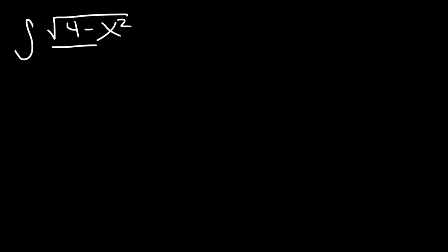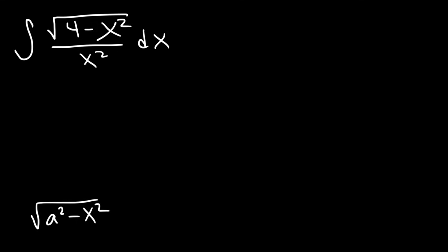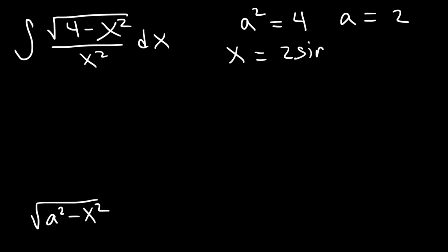Let's work on an example problem. We have the square root of 4 minus x squared divided by x squared — how can we integrate this function? We have the form square root of a squared minus x squared. We can clearly see that a squared is 4, which means a is equal to the square root of 4, or 2. Therefore we need to replace x with a sine theta; in this case x has to be 2 sine theta.